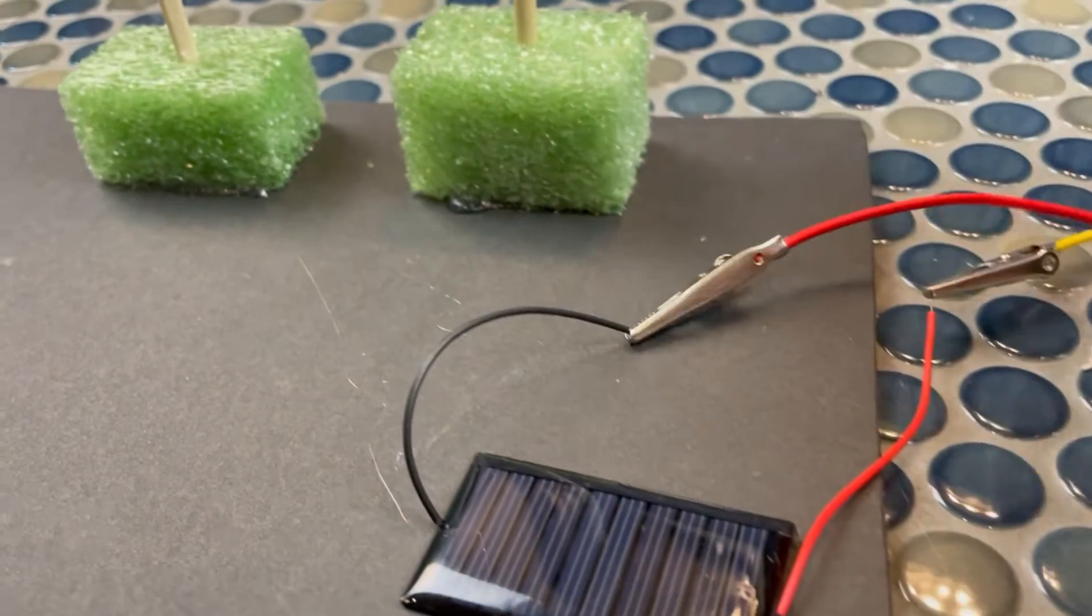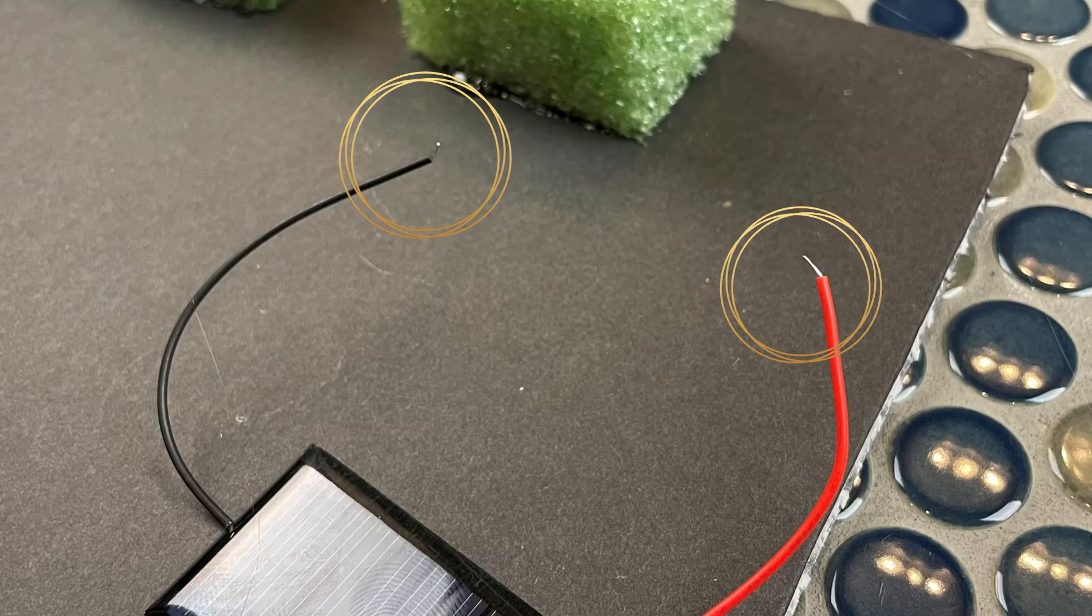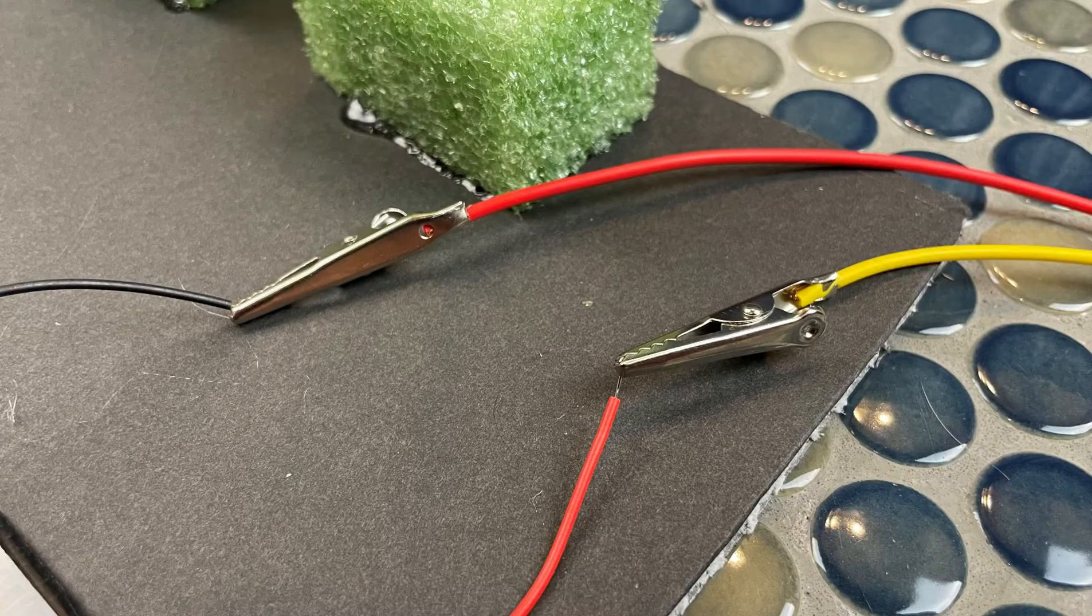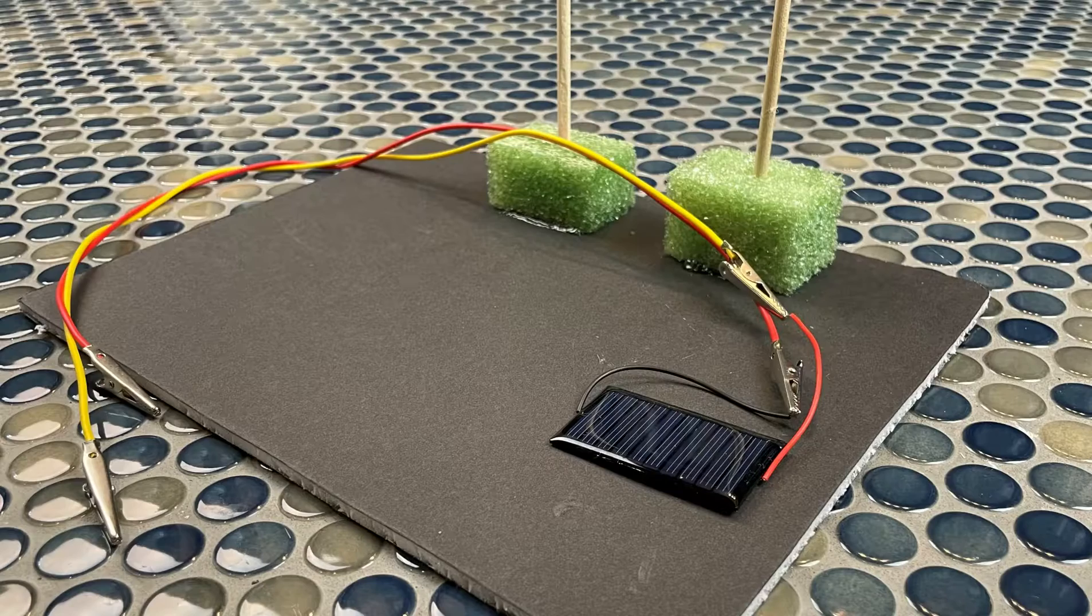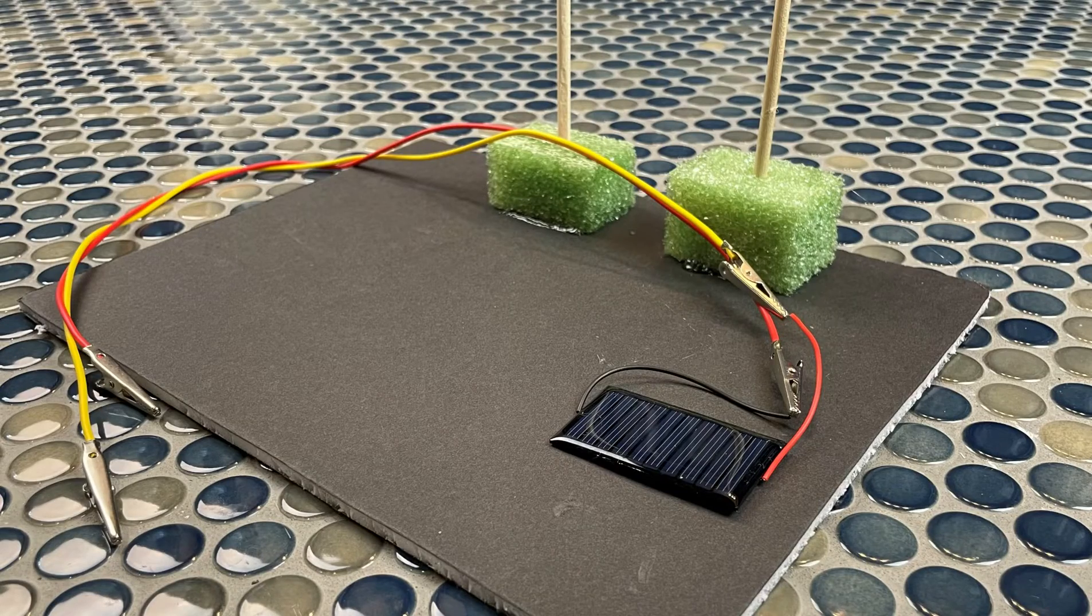First, we're going to clip one end of each of them to the very end little piece of wire that's sticking out of the solar panel. Make sure that it's only touching metal, because if it's clamping onto the rubber part of the wire, it's not going to work.